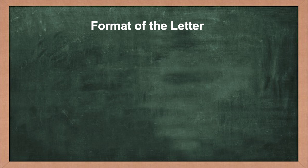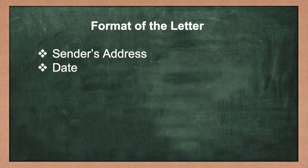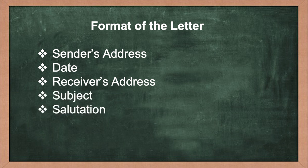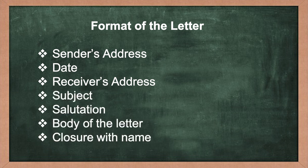The first thing is the format of the letter. You draw the margin and on the extreme left-hand side you write the sender's address — mind you, don't write the name of the person — then date, then receiver's address, subject, salutation, body of the letter, and closure with name. Most formal letters are written in block style using blank lines between paragraphs and lining everything up along the left margin.